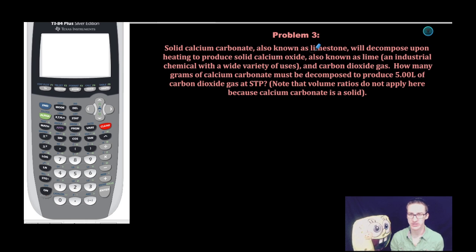Solid calcium carbonate, also known as limestone, will decompose upon heating to produce solid calcium oxide, also known as lime, an industrial chemical with a wide variety of uses, and carbon dioxide gas. How many grams of calcium carbonate must be decomposed to produce 5.00 liters of carbon dioxide gas at STP?